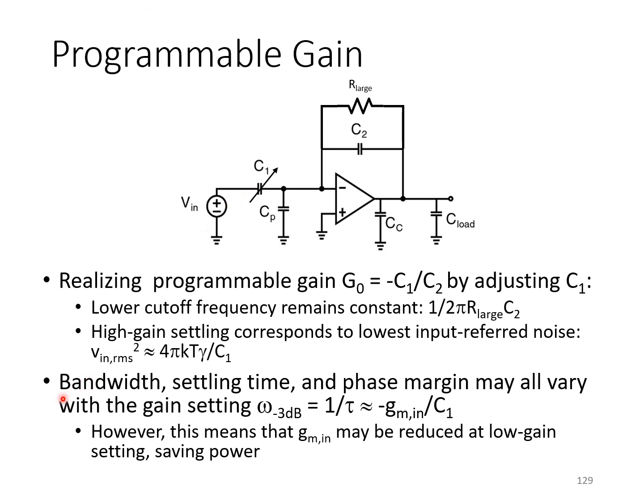On the other hand, the bandwidth, settling time, and phase margin may all vary with the gain setting since they generally depend on the GM of the OTA and C1.